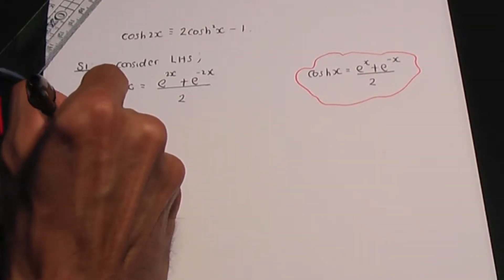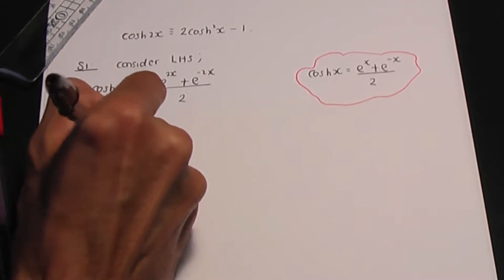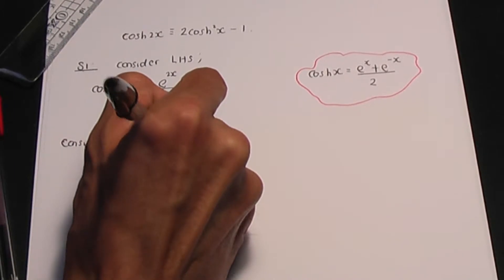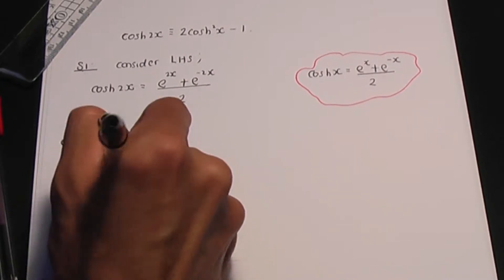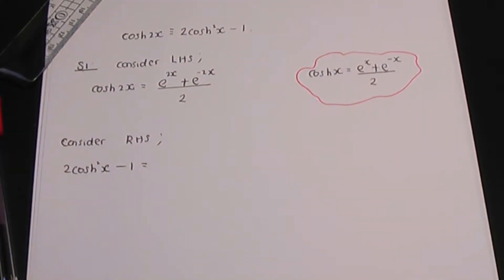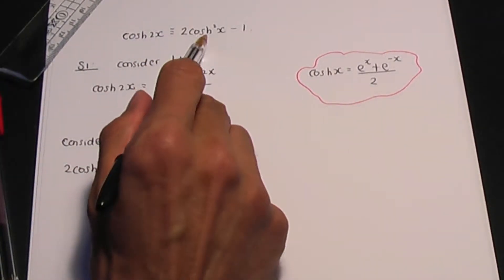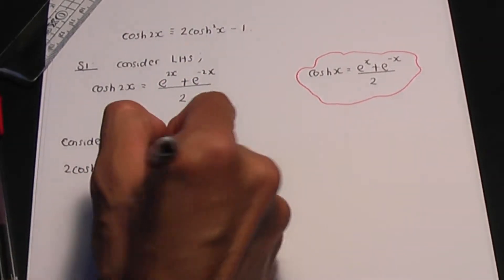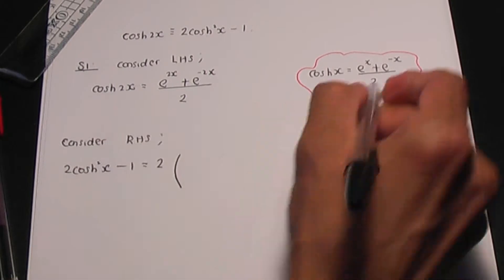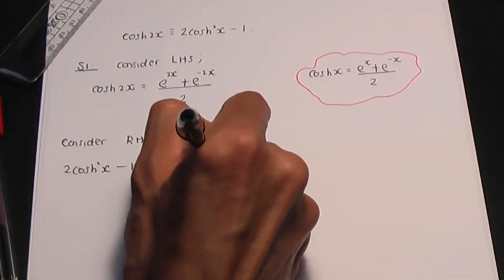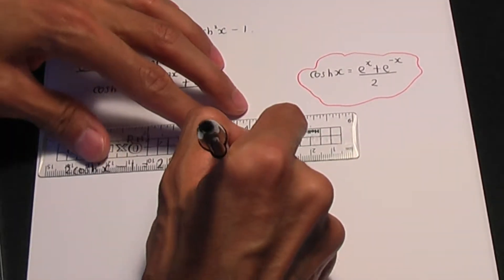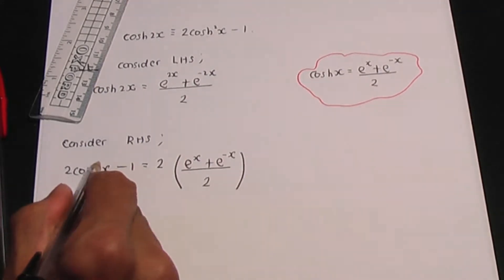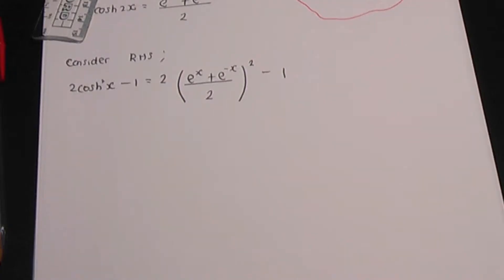Now let's consider the right hand side of the identity. The right hand side reads 2 hyperbolic cos squared x minus 1. To prove identities we need to use the definitions, so applying the definition of hyperbolic cos on the right hand side, I'll have 2 multiplied by hyperbolic cos x, which is e to the x plus e to the minus x, divided by 2.